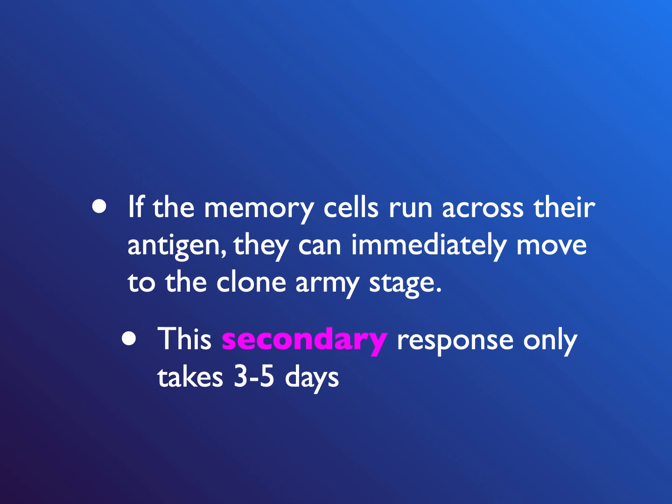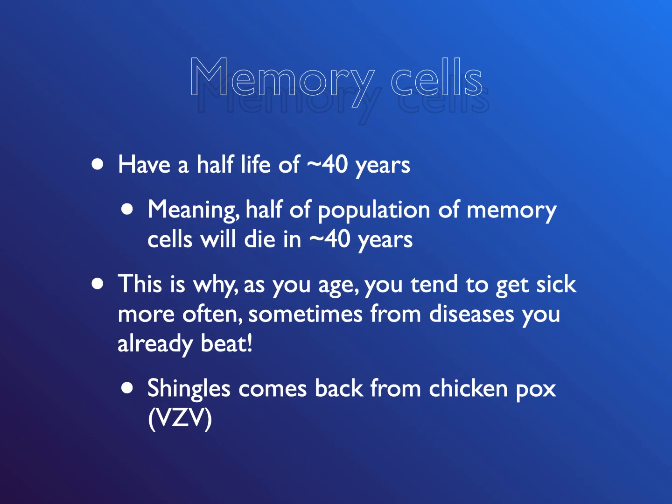If memory cells run across their antigen again, they can immediately move to the clone army stage. They don't have to go through a two-week primary response. This is called a secondary response, and it takes only three to five days. This is why some diseases, when you get them, you only get infected once and show symptoms, because the next time you see it, your immune system's there waiting and wipes it out in three to five days.